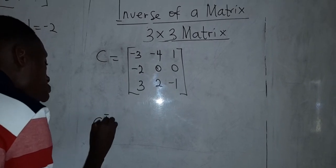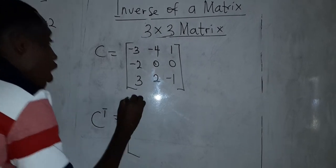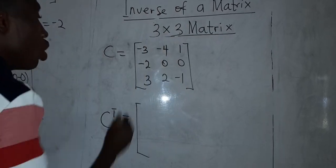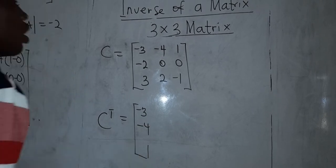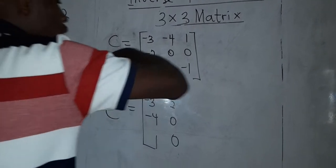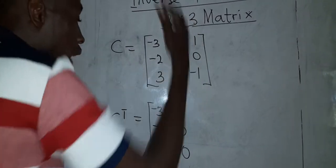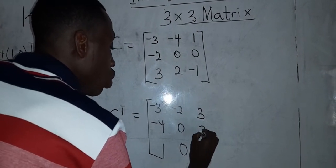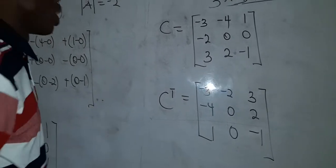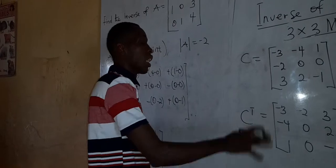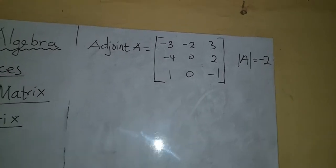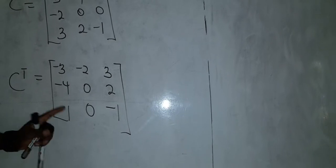Now find the transpose of the cofactor matrix. The first column [-3, -4, 1] becomes the first row; the second column [-2, 0, 0] becomes the second row; the third column [3, 2, -1] becomes the third row. So the adjoint is [-3, -2, 3; -4, 0, 2; 1, 0, -1]. This is the adjoint of matrix A — the transpose of the cofactors.